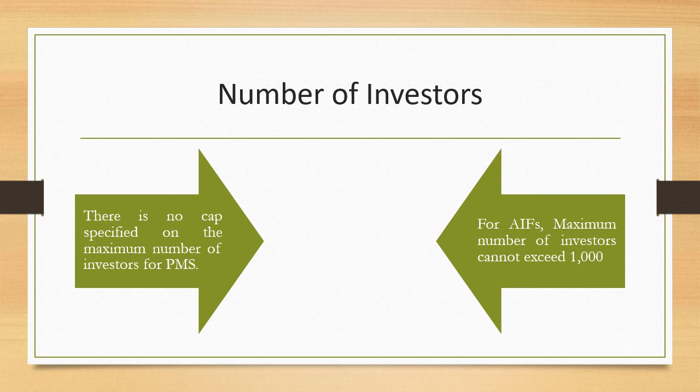Next, let us look at the minimum and maximum number of investors for PMS and AIF. For PMS, there is no cap specified on the maximum number of investors — the minimum can be one investor and there is no upper limit. For AIFs, the maximum number of investors cannot exceed 1,000. So there is a clear distinction in terms of the number of investors allowed in PMS versus AIF.